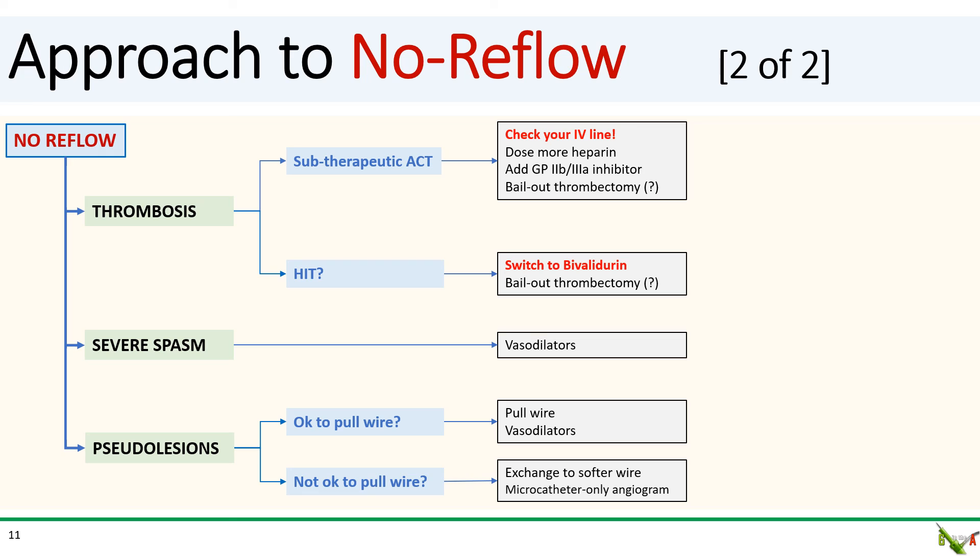If you cannot pull the wire, then exchange it to a softer wire such as a Sion 0.3 if you have that available in your lab. Alternatively, you can also exchange your wire to just a microcatheter such as a Finecross and reassess whether your no reflow is just due to pseudo lesions. The body of a microcatheter is often more flexible than a coronary guidewire and is less likely to cause pseudo lesions.